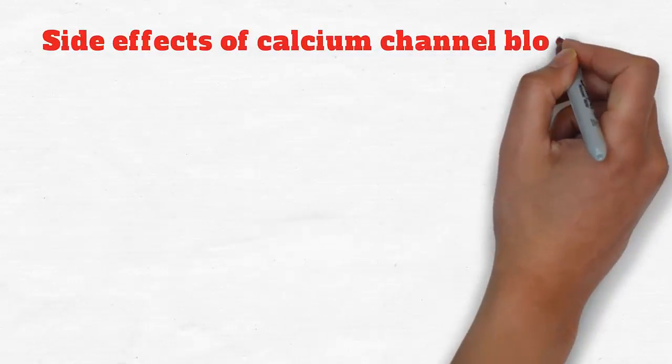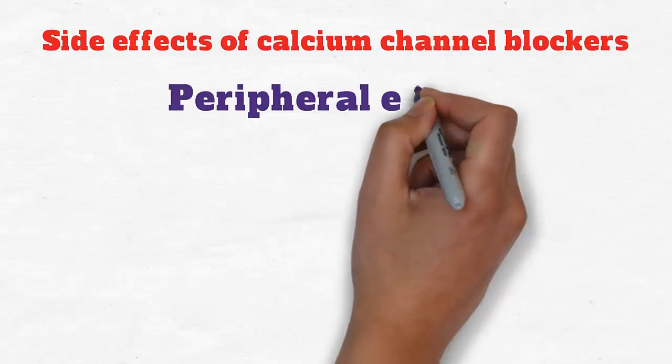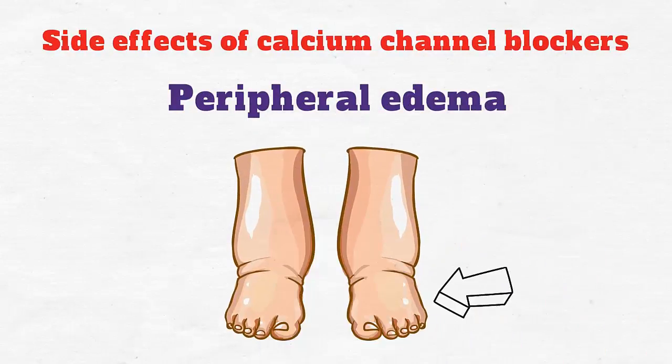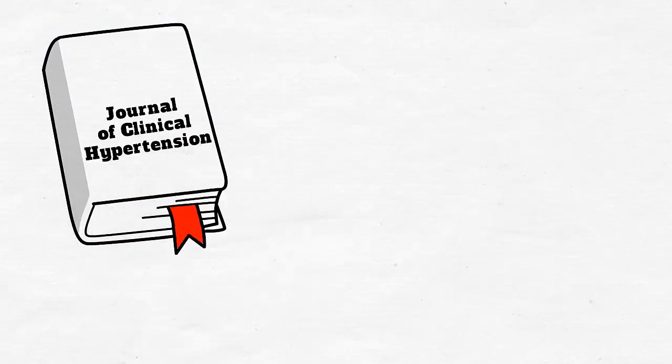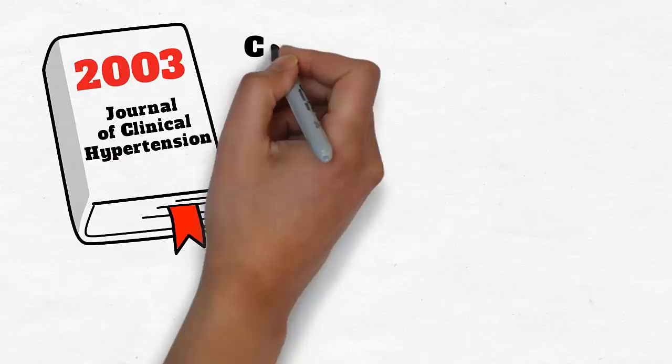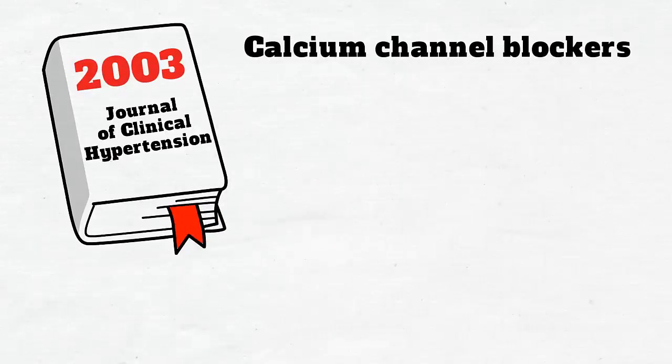The common side effects of calcium channel blockers include peripheral edema, or swelling of the legs, feet, and ankles from the accumulation of fluid. According to a study published in the Journal of Clinical Hypertension in 2003, calcium channel blockers may cause edema.